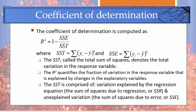As it states here, the r squared quantifies the fraction of variation in the response variable that is explained by changes in the explanatory variables. It's comprised of, or we compute it by taking the variation explained by the regression equation, which is the sum of squares due to regression, or SSR, and the unexplained variation, the sum of squares due to error.